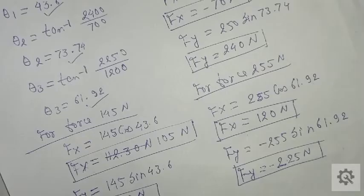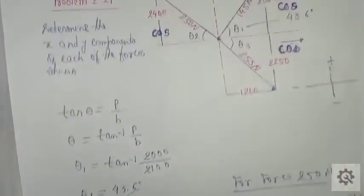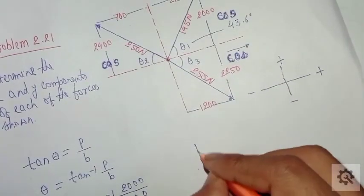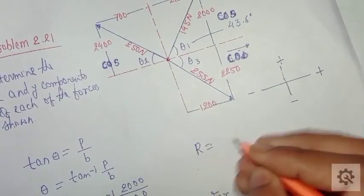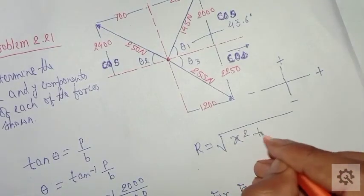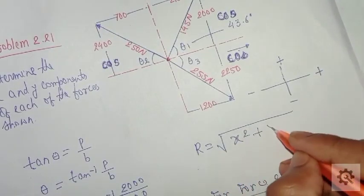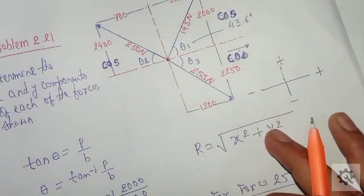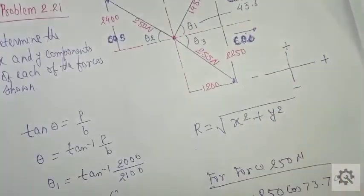For the resultant, you need to apply the formula: R equals square root of (Rx squared plus Ry squared). Find the resultant of this force by yourself; if you need any help, contact me personally.